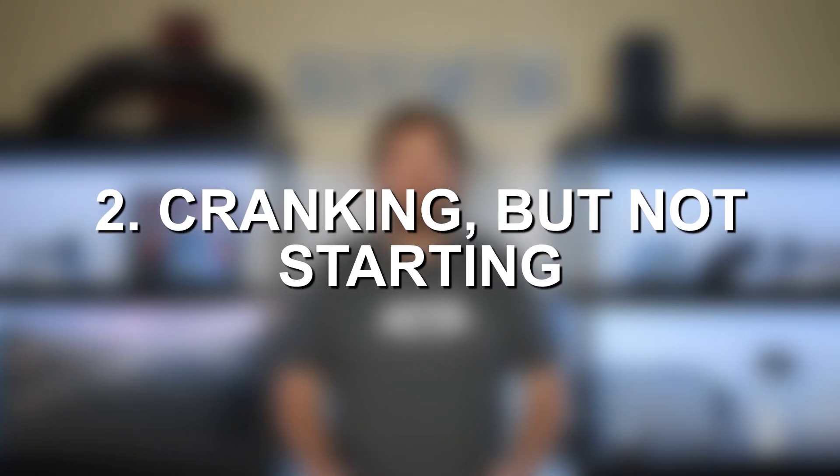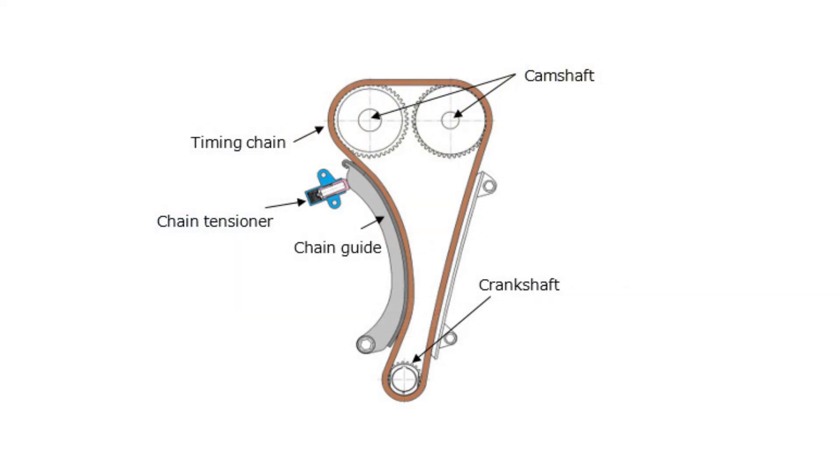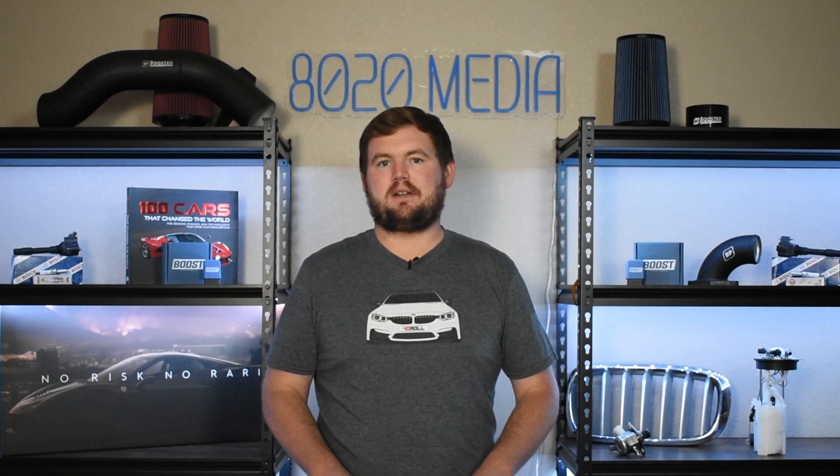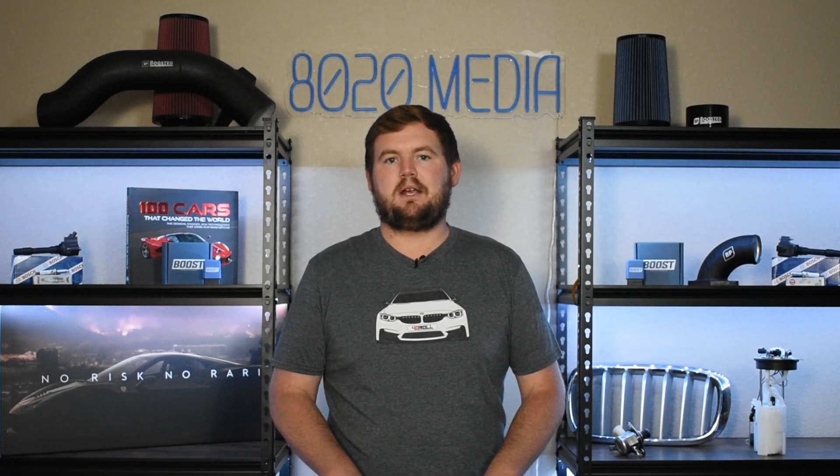Symptom number two is the vehicle cranking but not actually starting. Common causes for this include issues with the camshaft or crankshaft position sensors, variable valve timing system, or timing chain components. A stretched or jumped timing chain, broken guide, or faulty tensioner can throw crankshaft and camshaft timing completely out of sync, meaning the engine can't get the proper amount of air and fuel at the proper times. In severe cases, if the timing belt has snapped or the chain jumped excessively, the vehicle may not even crank.